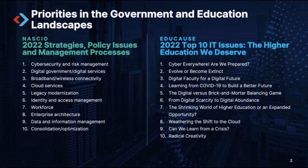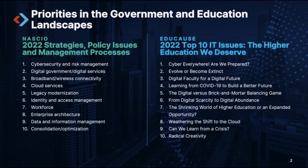Number seven is workforce, and this is one that I think is really important in both the college side as well as the government side. The last couple of years have shown us that the workforce is far more fluid than anyone ever thought it would be. We see what we're terming the great resignation taking place across industries around the world. People are looking for different ways to work, different ways to live. As CIOs, whether you're in a college, educational, or government environment at any level, you're going to be facing issues of having to try to retain your workforce.